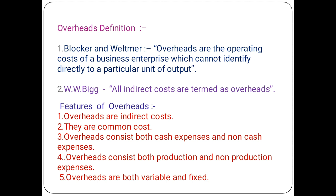Fourth feature: overheads consist of both production and non-production expenses. In the process of production, expenses can be direct or indirect, but in overheads we only consider indirect expenses. Overheads may be incurred in the production process as well as non-production processes. For example, factory overheads involve indirect material, indirect labor, and indirect expenses used in the factory. Similarly, selling and distribution department overheads include materials for sale, delivery labor, and indirect expenses.